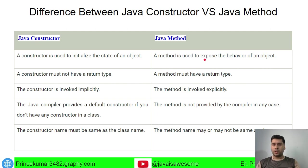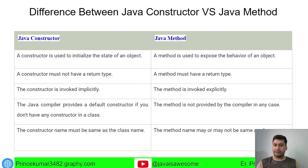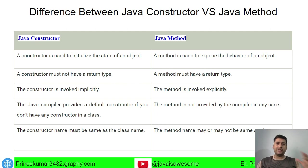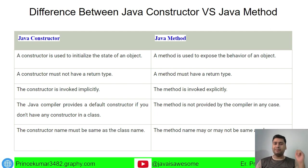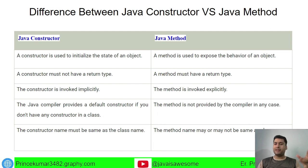A method is used to expose the behavior of an object. If we want to modify the object's details or perform some behavior on it, we take the help of a method. We can write a method, pass the object into it, and it will modify the object's behavior.